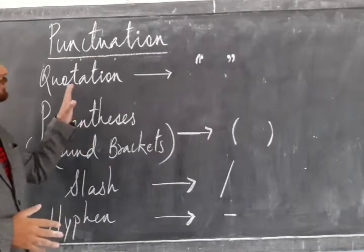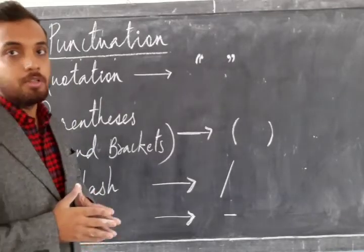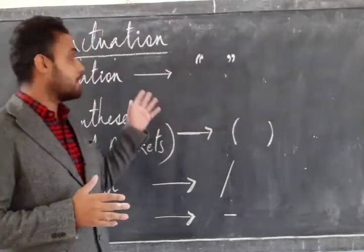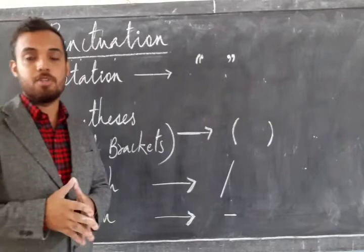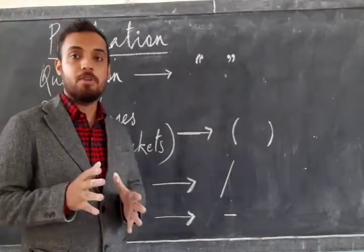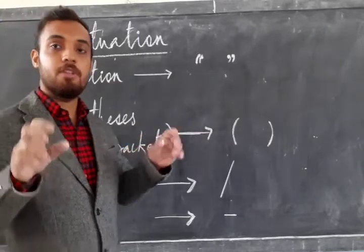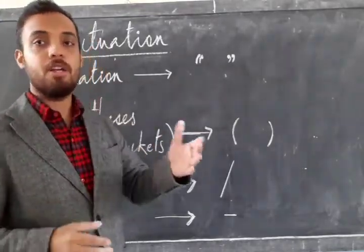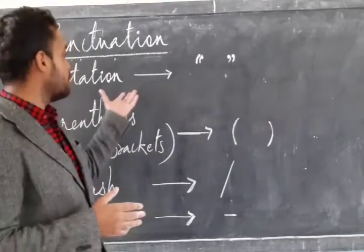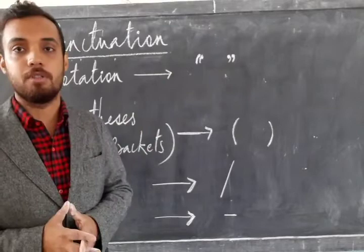The next one is quotation mark. What is the use of quotation mark? Before telling about this, we have studied about direct and indirect speech. You remember that in direct speech we were putting the direct speech within the quotation mark, and indirect speech we were bringing out of it. So the use of quotation mark is to show the direct speech of a person.